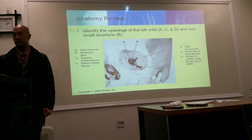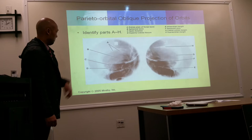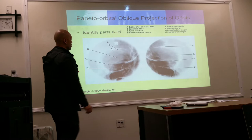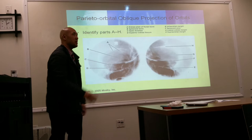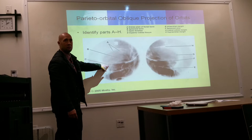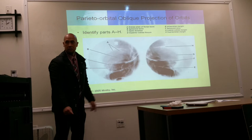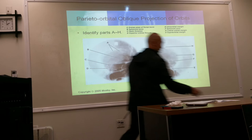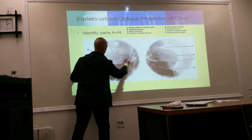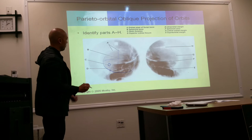In the Rhese method, with the AML perpendicular and a 37-degree rotation, the optic foramen is placed within the orbital margins. Specifically, when properly positioned, the optic foramen will be located in the lower outer fourth quadrant of the orbit.